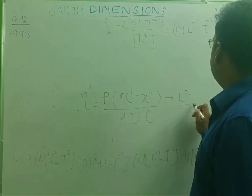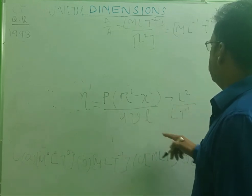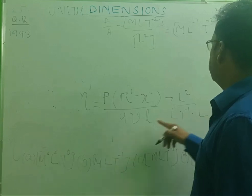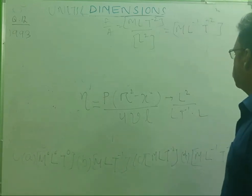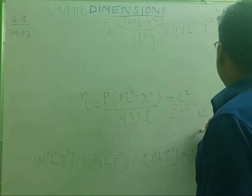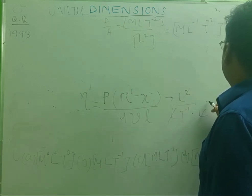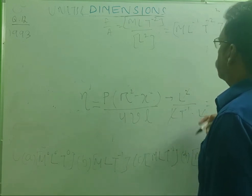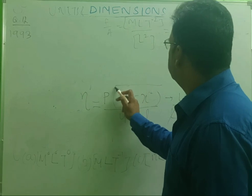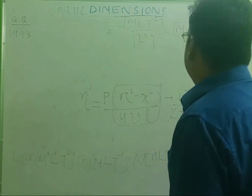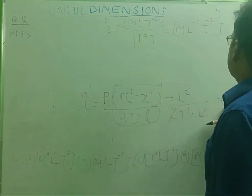And that of length is L. So this L L will cancel out L square and this T minus 1 will go upward T. The entire portion, this is the dimension T.